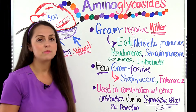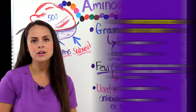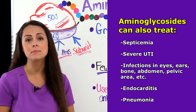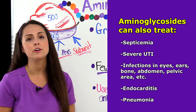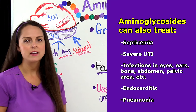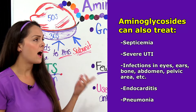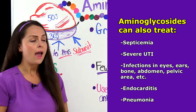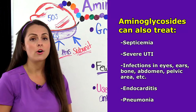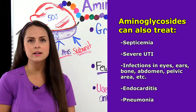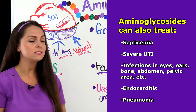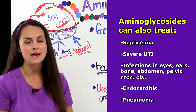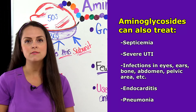Because of all these microorganisms that aminoglycosides can target, they're really good at treating certain cases of septicemia where we have infection in the blood, severe cases of urinary tract infection, and infections that affect certain parts of the body such as the eyes, ears, bone, abdomen, and pelvic areas. They can treat cases of endocarditis, and severe cases of pneumonia usually acquired from the hospital setting because those strains tend to be very severe.